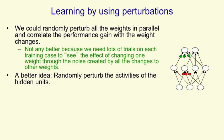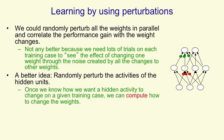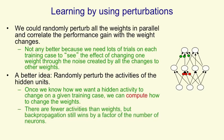Something that does help is to randomly perturb the activities of the hidden units instead of perturbing the weights. Once you've decided that perturbing the activity of a hidden unit on a particular training case is going to make things better, you can then compute how to change the weights. Since there are many fewer activities than weights, there are fewer things you're randomly exploring, making the algorithm more efficient. But it's still much less efficient than backpropagation — backpropagation still wins by a factor of the number of neurons.